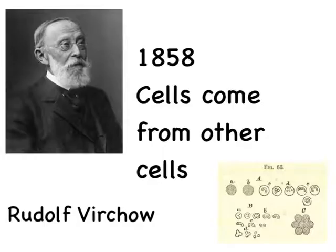A little bit of time passed and there was a man named Virchow. Virchow was also looking at cells, but he was interested in the origin of cells. Because so far, Schleiden and Schwann knew that things were made out of cells, but they didn't know where cells came from. So after much careful observation, Virchow decided that cells came from other cells. And this is going to be the last part of the cell theory.